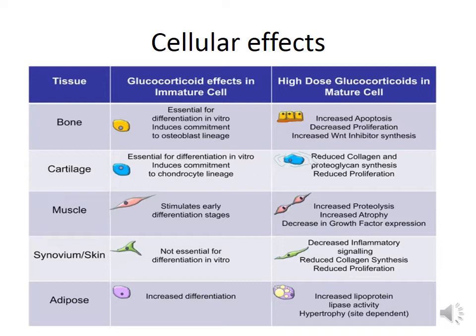In muscles, glucocorticoids increase proteolysis, causing muscle atrophy, and decrease growth factor expression so there is no replacement for these atrophied muscles. In the skin, they decrease inflammation and decrease collagen synthesis, which is responsible for the striae observed with continuous glucocorticoid administration. As for adipose tissue, they increase lipoprotein lipase activity, causing delivery of triglycerides and free fatty acids and deposition into adipose cells, causing hypertrophy and a characteristic site-dependent truncal obesity.